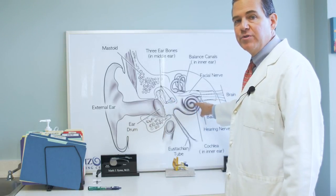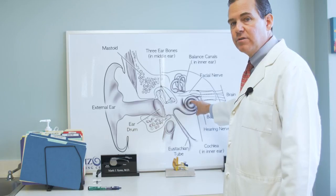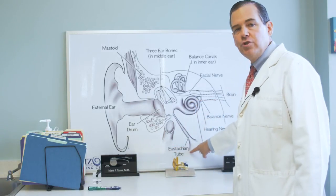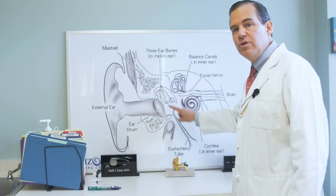Within the cochlea, there are little receptor cells that receive the sound, turn it into a nerve signal, and send a message to the brain. There is a tube called the eustachian tube that connects your nose to your ear.